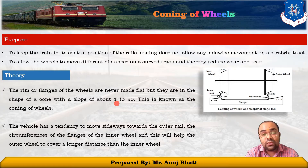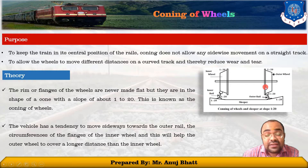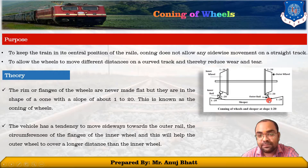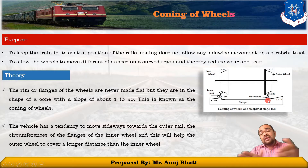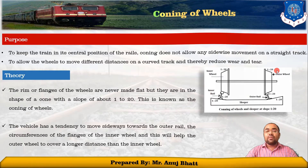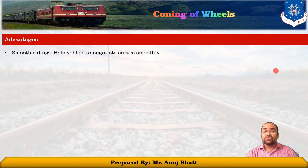That is how smooth riding can be produced by providing the conning of the wheel. Here you can see the actual gauge distance, but if the outer rail needs to cover a greater distance, the wheel has the flexibility to accommodate that, which is why the train can easily take a curve on the track. Talking about the advantages of conning of wheels: it provides smooth riding, which helps the vehicle to negotiate curves smoothly.